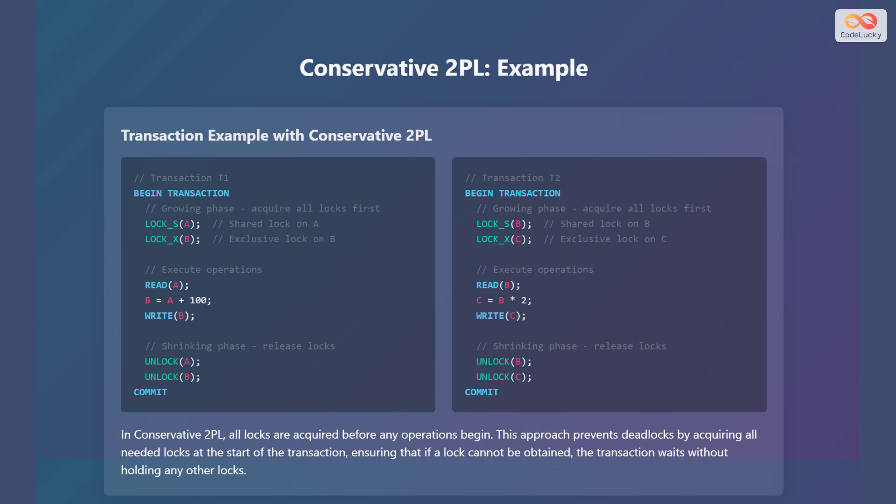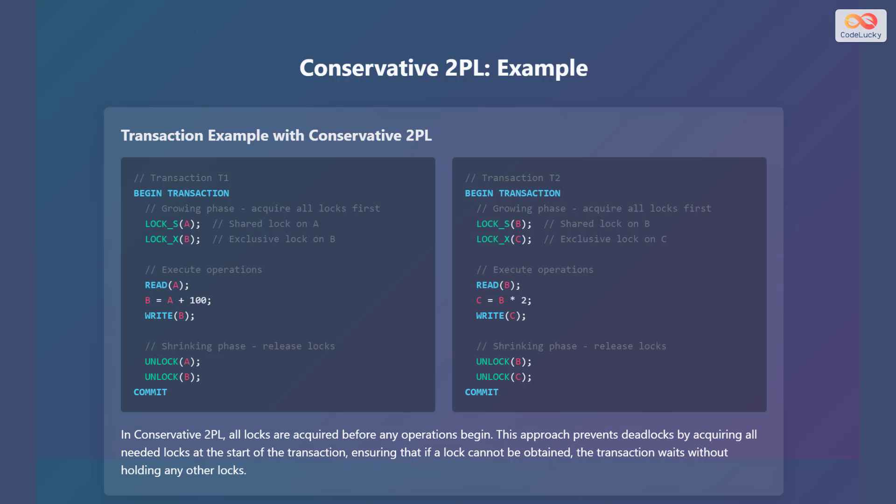Similarly, transaction T2 begins by acquiring a shared lock on data item B and an exclusive lock on data item C. It then reads data item B, multiplies its value by 2, and writes the new value to data item C. Finally, it releases the locks on B and C and commits the transaction. In conservative two-phase locking, all locks are acquired before any operations begin. This approach prevents deadlocks by acquiring all needed locks at the start, ensuring that if a lock cannot be obtained, the transaction waits without holding any other locks.